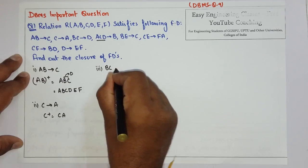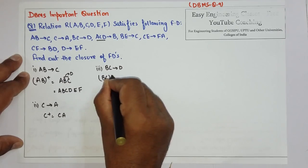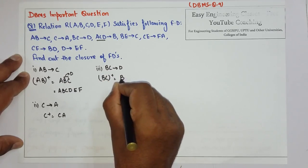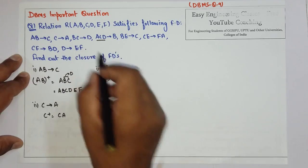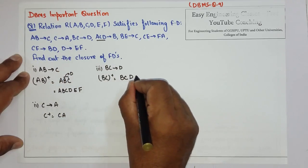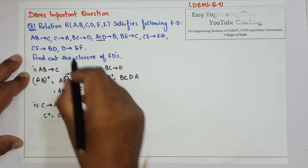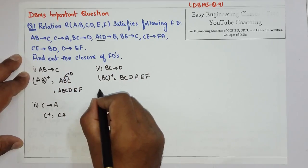Then find for BC to D. So BC plus is BC and from BC you can get to D. So write D, from C you can get to A and from D you can get to EF. So BC closure is all the six attributes.